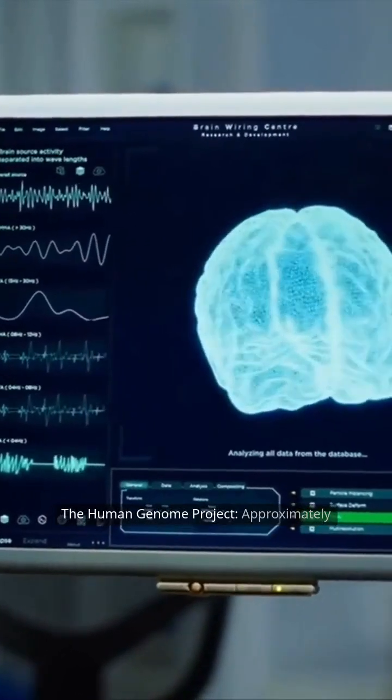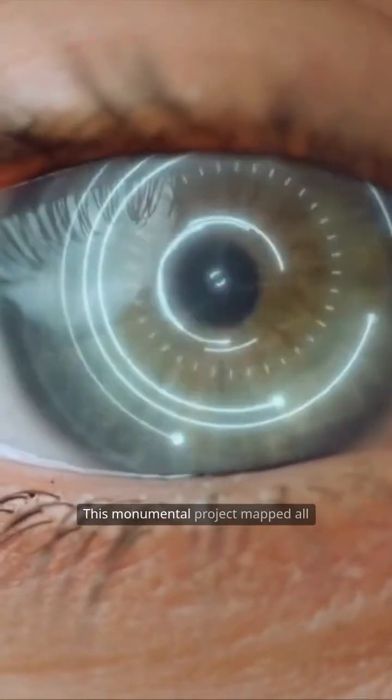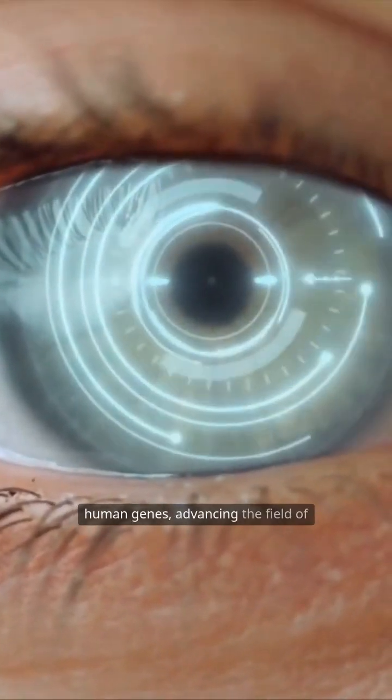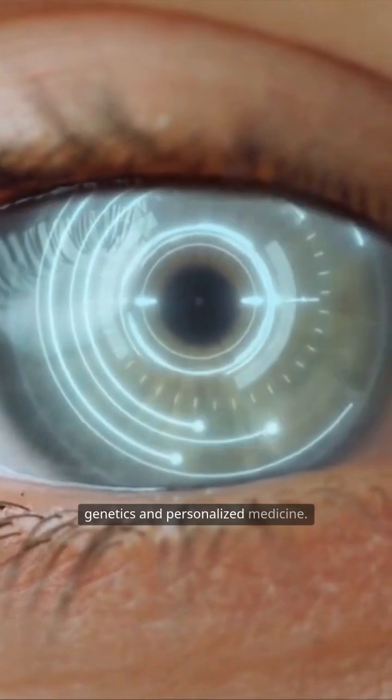Number one, the Human Genome Project. Approximately $3 billion. This monumental project mapped all human genes, advancing the field of genetics and personalized medicine.